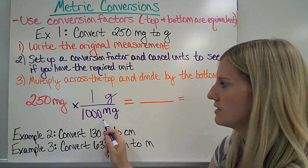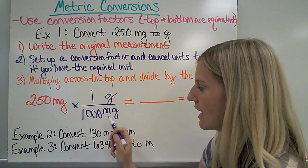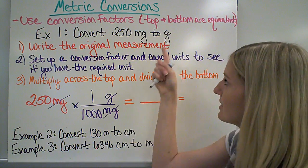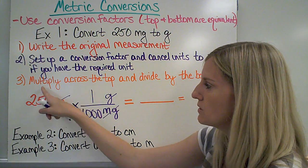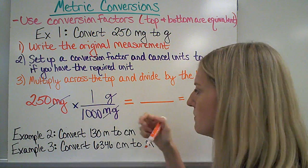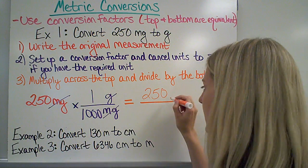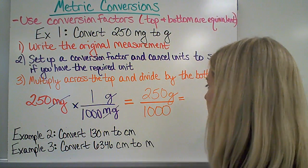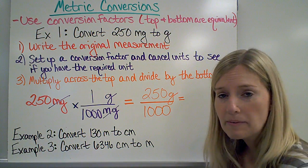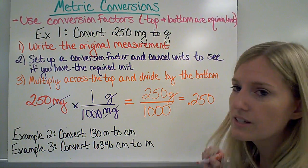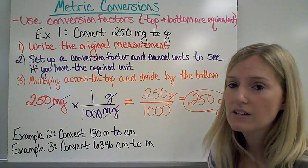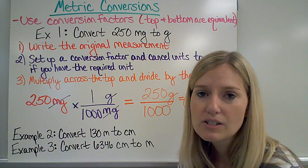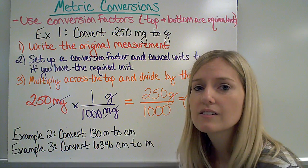I set up my conversion factor — that's done. Now I cancel my units: milligrams on the top, milligrams on the bottom — those cancel. The only unit not crossed out is grams, which is what I want for my answer. So I multiply across the top and divide by the bottom: 250 times 1 is 250 grams, divided by 1,000, gives me 0.250 grams. I circle my answer. These problems must be completed using this conversion factor — moving the decimal point will not get you all of the available points. This is an important skill we need to have.